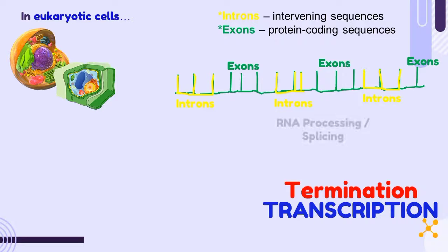With that, this mRNA will undergo RNA processing or splicing. So during RNA processing or splicing, introns will be detached from the mRNA with the help of various splicing enzymes. And exons will be left in the transcript.